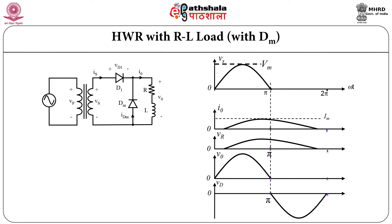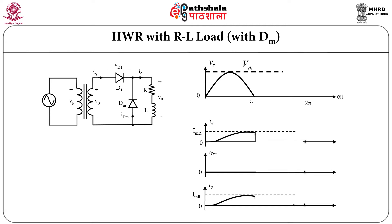Therefore, this circuit is not used as it is. There is another problem: when the diode turns off, because of the back EMF of the inductor, diode D1 may be damaged because the inductor voltage reverses during turn-off. To avoid this type of problem, an additional diode is used which is called a freewheeling diode.